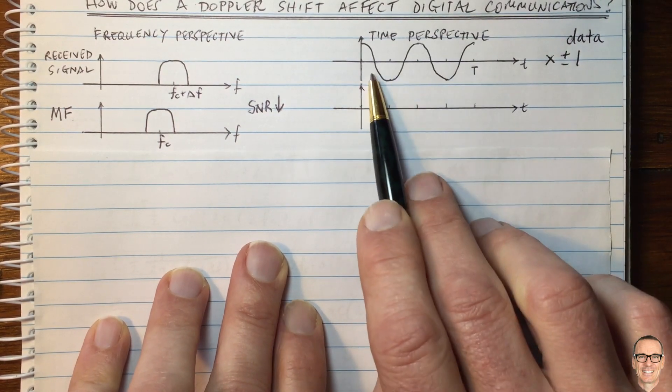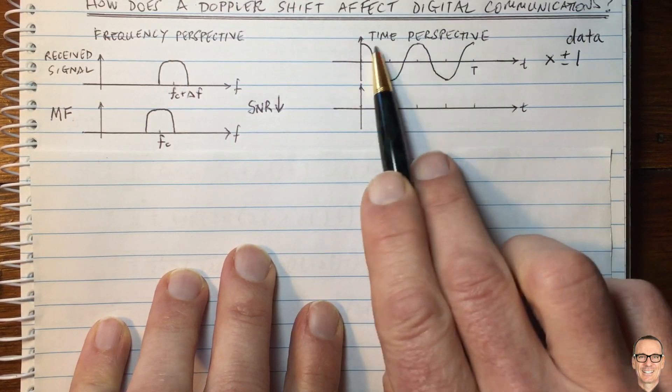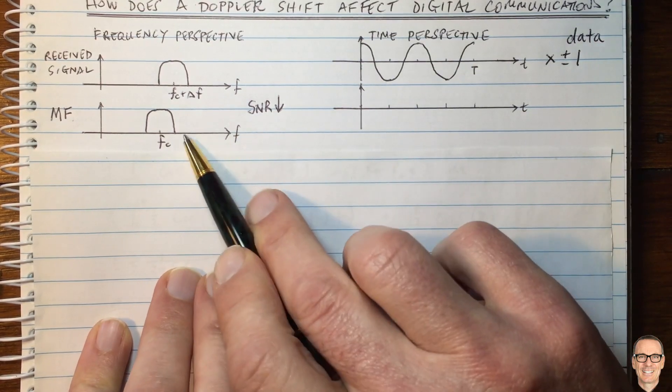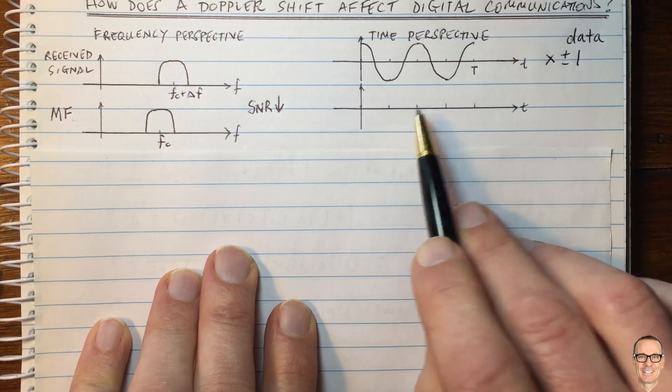Now, let's say that transmitted signal has gone through a Doppler shift, and so it is not going to be at the same frequency as at the receiver as it was at the transmitter. So again, we're looking at our matched filter. Our matched filter will be at a different frequency.